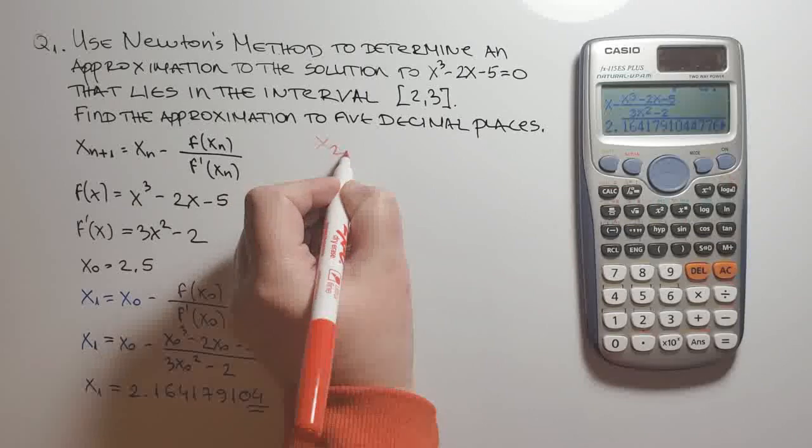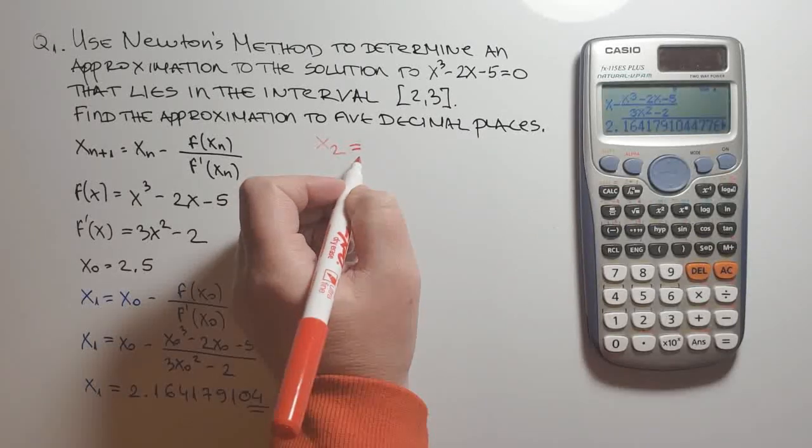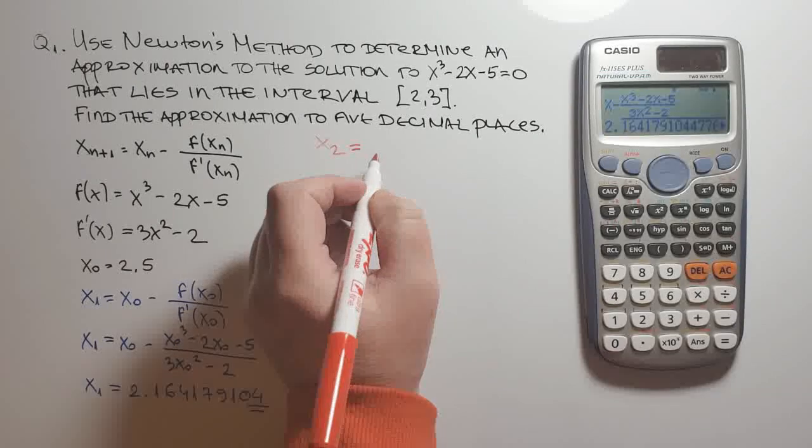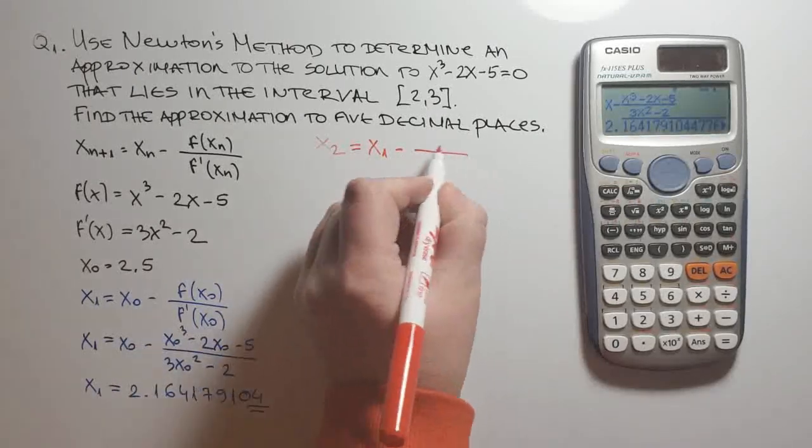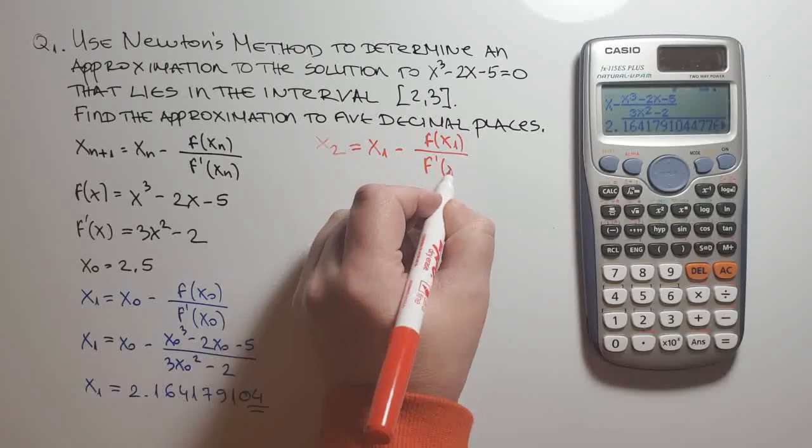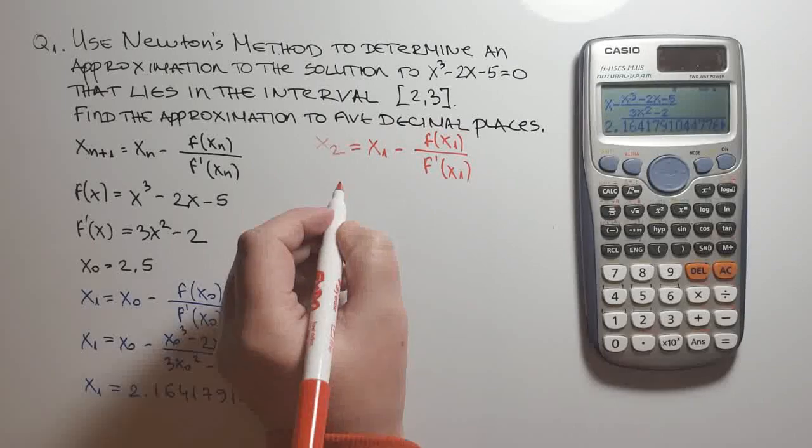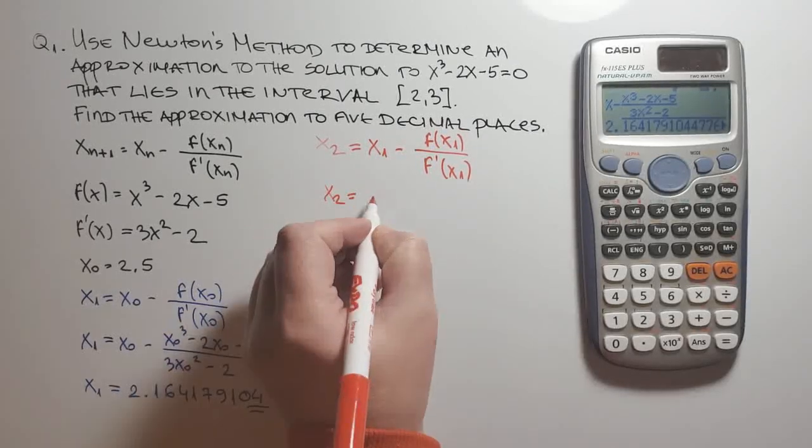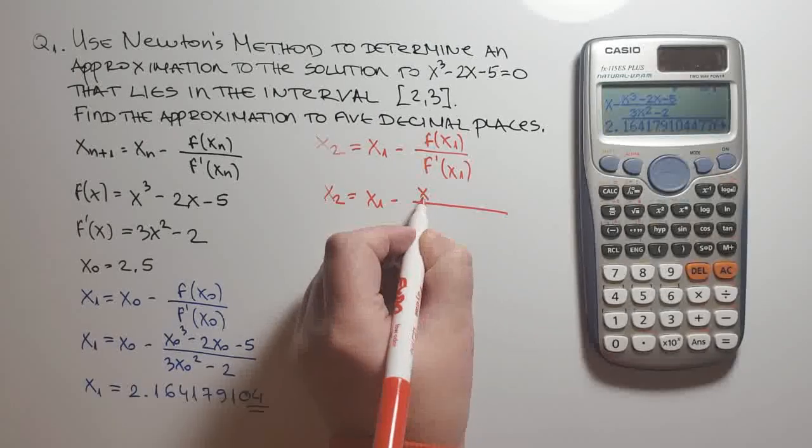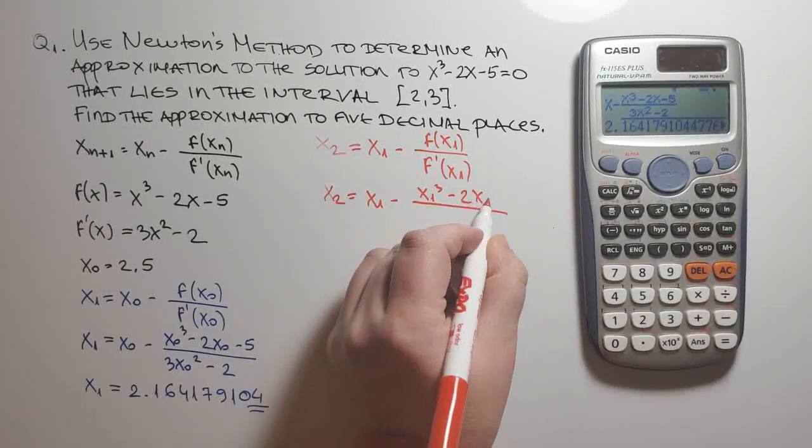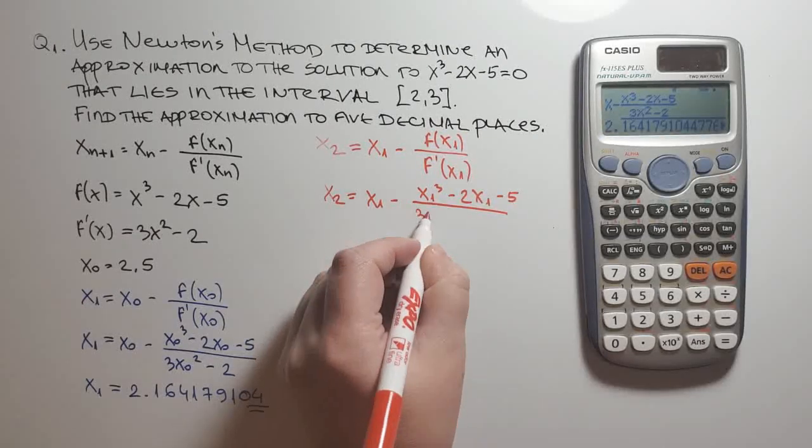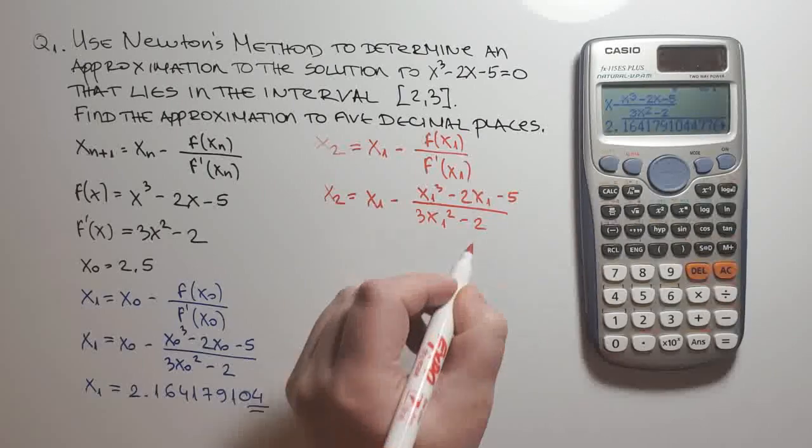So for x sub 2 we have by the principle of Newton's method x sub 1 minus f of x sub 1 divided by f prime of x sub 1. Or x sub 2 equals x sub 1 minus x sub 1 cubed minus 2x sub 1 minus 5 divided by 3x sub 1 squared minus 2.